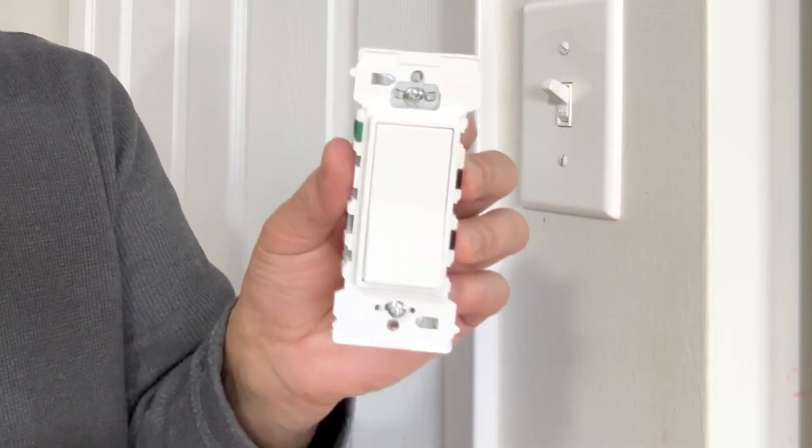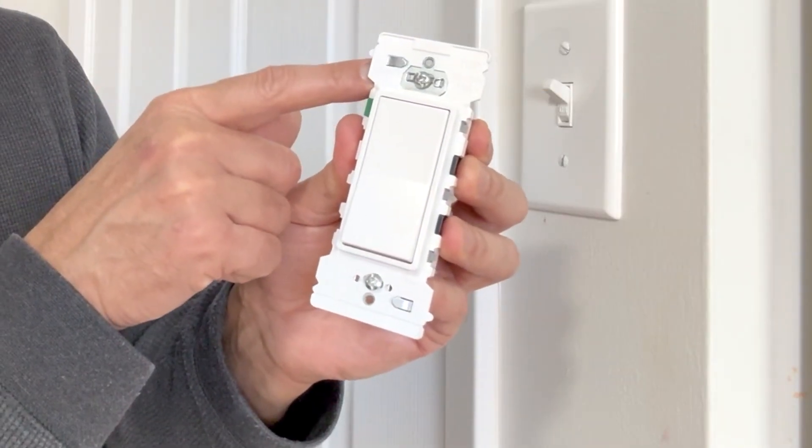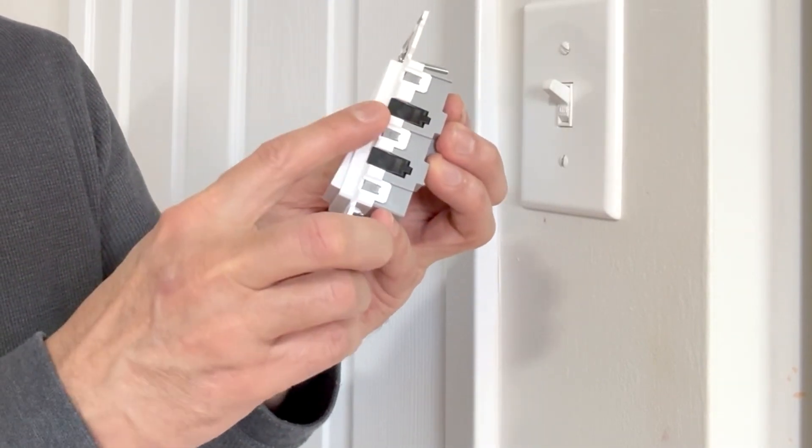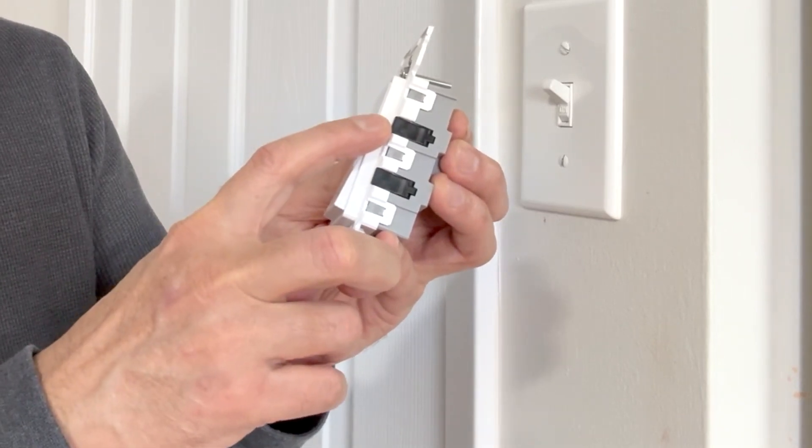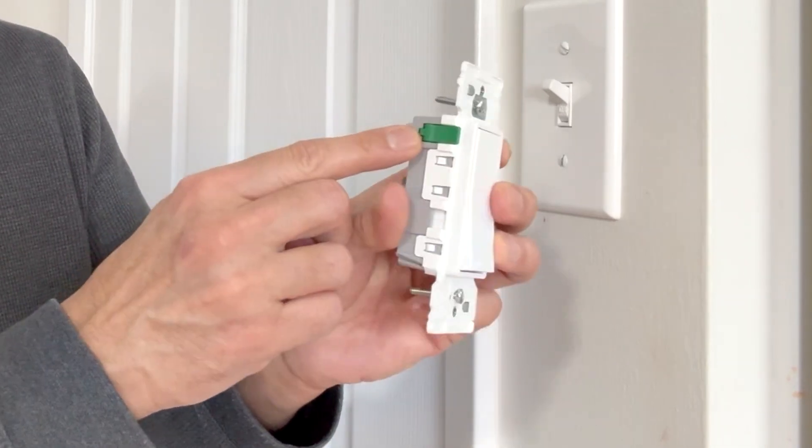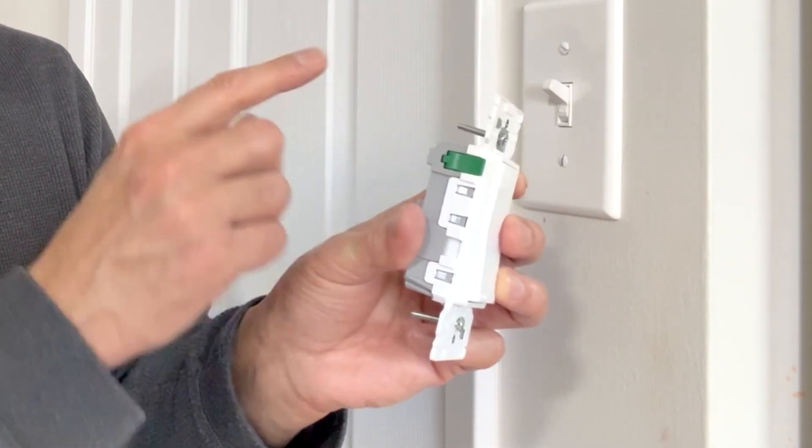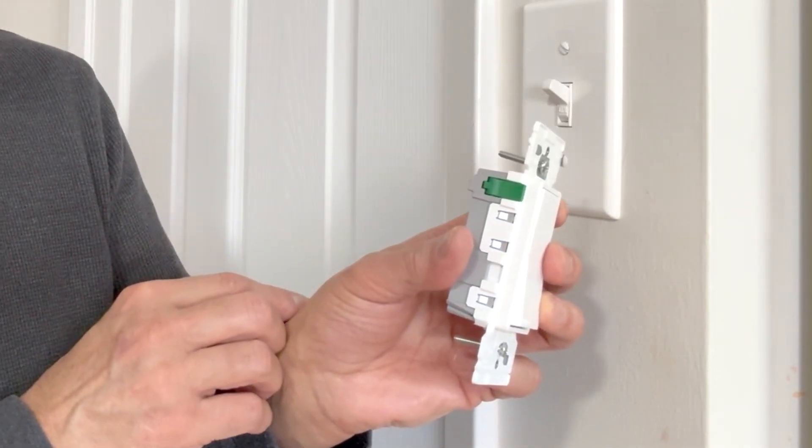On the front side of the switch you will see top is marked here. So this side is top. That means the line in and line out or you can say line in and load out. These black wires are connected on the right side. On the left side we have a green connector where we will connect the ground wire if it is available. This is an old house so maybe the ground wire is not there.